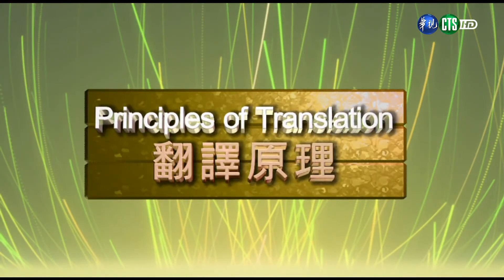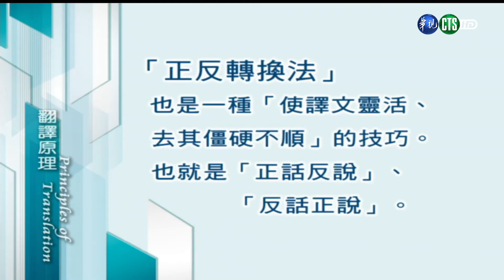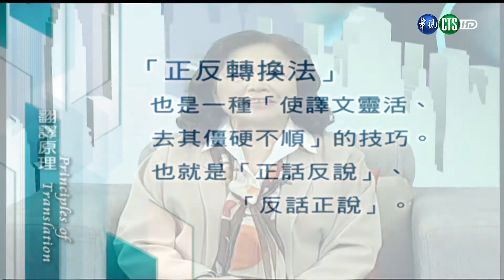翻译原理。正反转换法也是一种使译文能够灵活、去其僵硬不顺的技巧。也就是说正话可以反说，或者反话可以正说。中英翻译时原文是正面的意味，翻译不一定硬性要翻成正面的意味；原文如果是反面的意味，那译文也不一定非要把它翻成反面的意味。